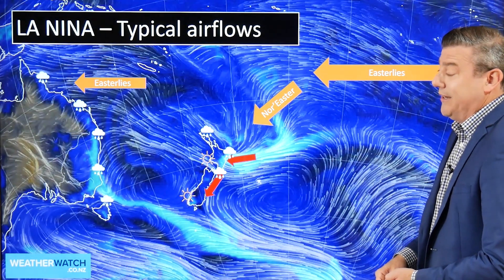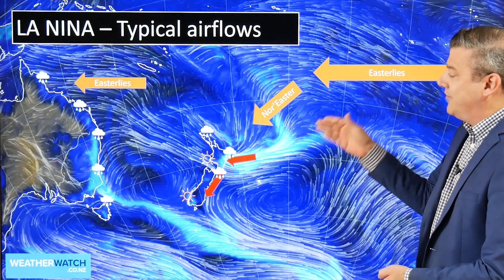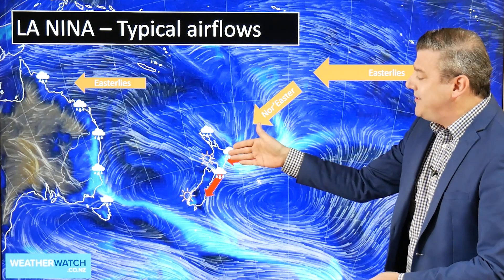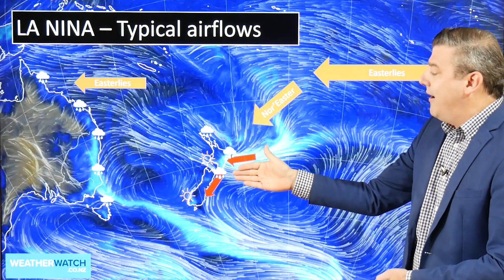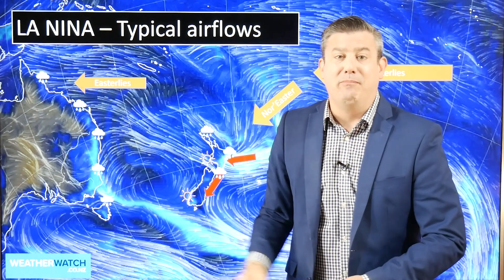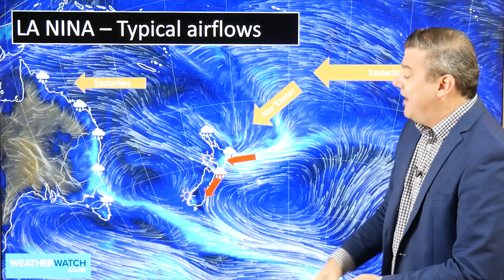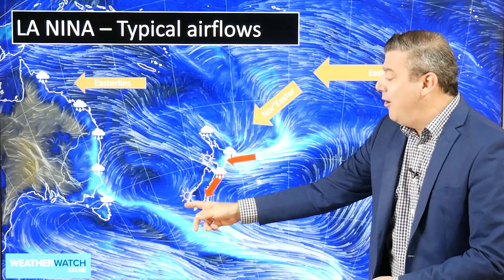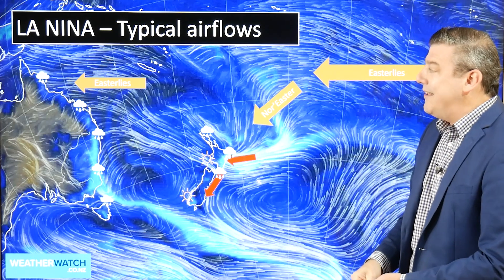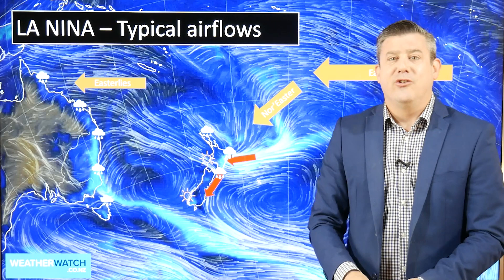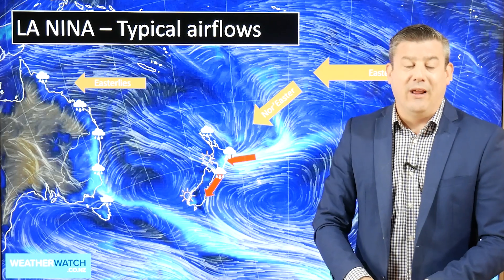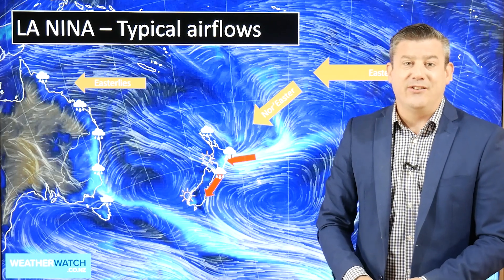So the setup for New Zealand and Australia means more humidity, nor'easters, and wet weather along the eastern sides of both nations — though it can be sunnier along the west. And in the eastern Pacific: drier, cooler, and the chance of drought.